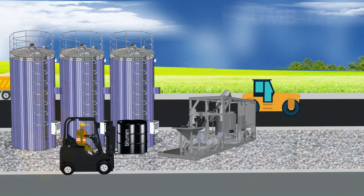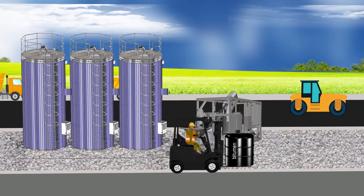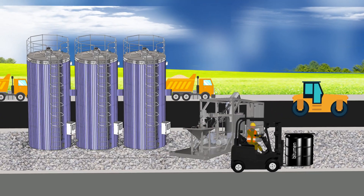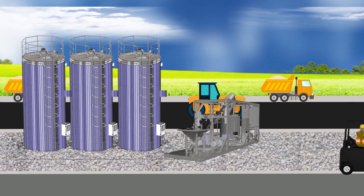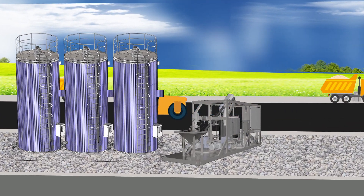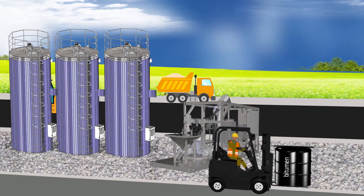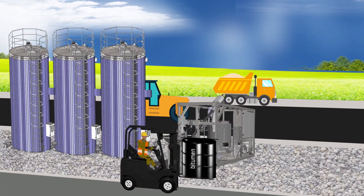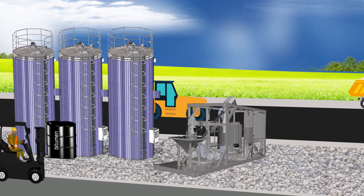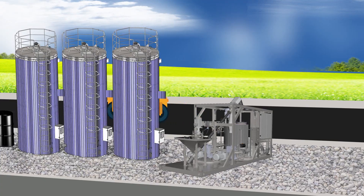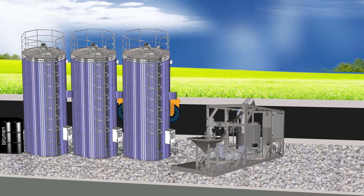The UMB-12P plants make it possible to organize the production of high-quality modified bitumen for larger volumes of asphalt concrete mixtures. Roads based on such mixtures last two to three times longer than those based on mixtures with regular bitumen.